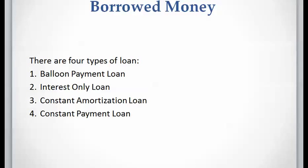There are four types of loans: Balloon Payment Loan, Interest Only Loan, Constant Amortization Loan, and Constant Payment Loan, which is the most common one. I explained the first three types in previous videos, and in this video I'm going to explain the Constant Payment Loan.